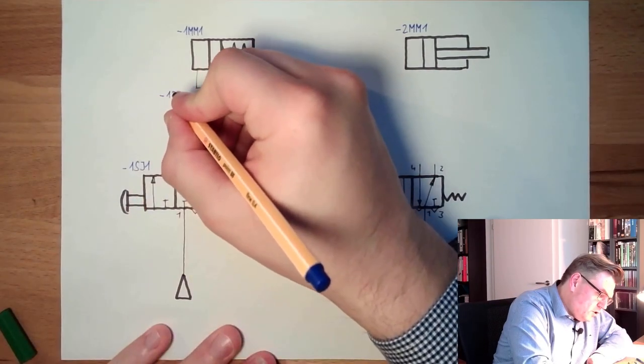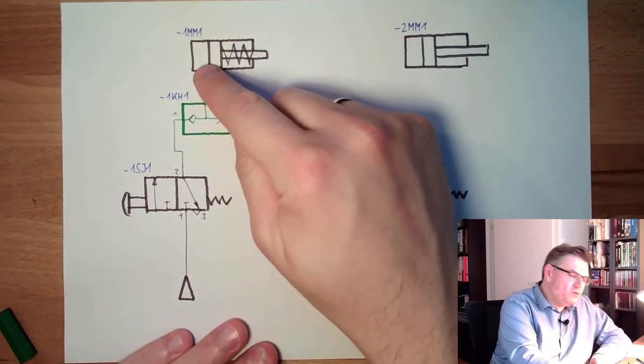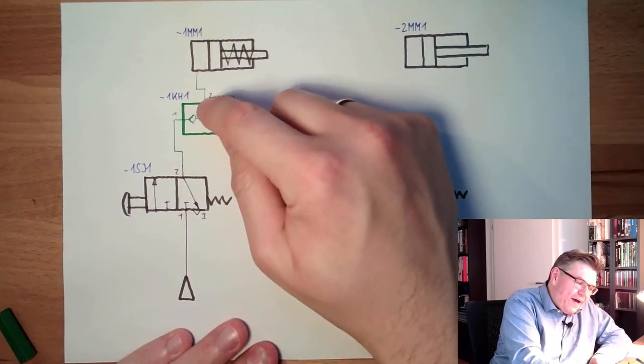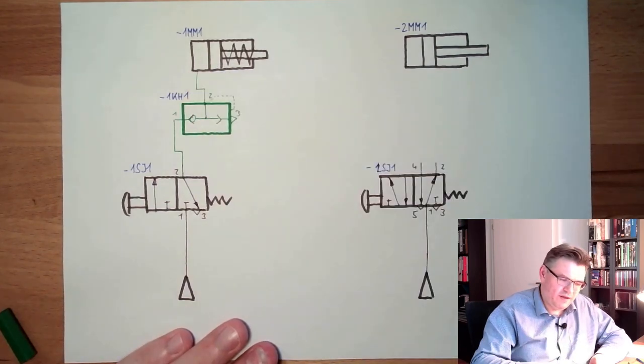So this means the distance between cylinder and quick exhaust valve should be rather small. Should be rather small. Here we have a cage. And so this is either directly at the cylinder or maybe a short hose or something like this.